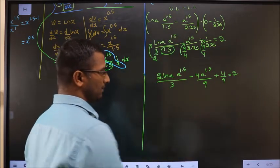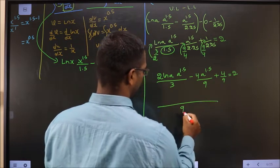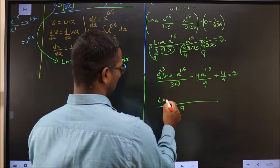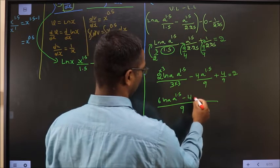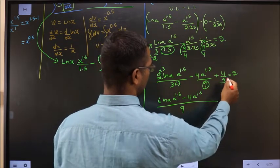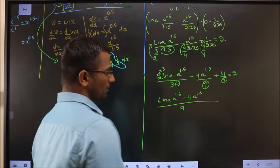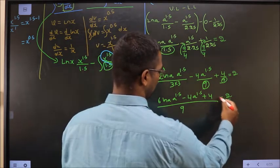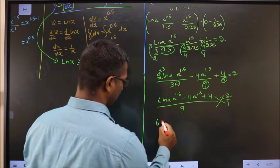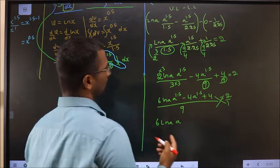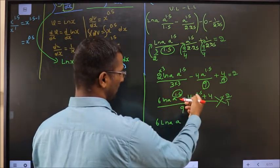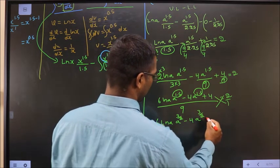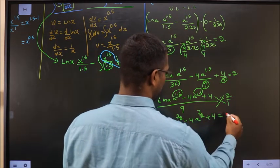Taking LCM of 3, 9, and 9, which is 9: multiply through. The numerator becomes: 6·ln(a)·a^(1.5) − 4·a^(1.5) + 4 = 2. Cross-multiplying gives: 6·ln(a)·a^(3/2) − 4·a^(3/2) + 4 = 18. Writing 1.5 as 3/2 throughout.